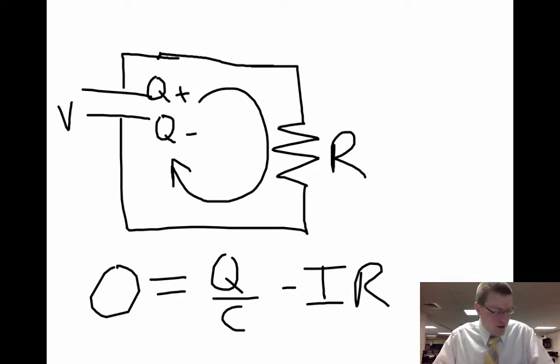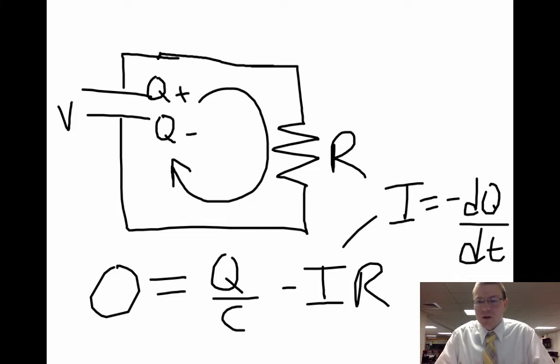But we want to focus on how the charge changes with time. And we said that since the charge is decreasing, we know that the current can be represented by negative dQ/dt, as the charge changes per second.